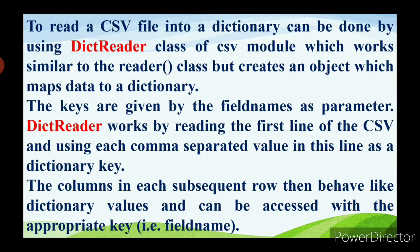Mapping means it is a process of creating a data element between two data models. The only difference between the dictionary reader and reader class is it creates an object which maps the data to a dictionary — that is, it assigns the data to the data model, which is the dictionary. It creates an object which maps data to a data model, that is, a dictionary. The keys are given by the field names as parameters.